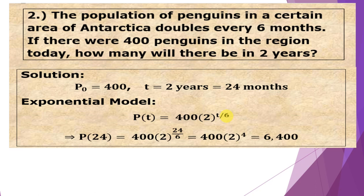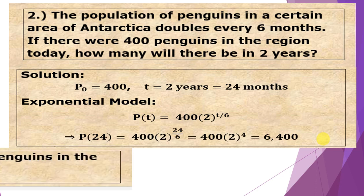So in this case, P(24) = 400 × 2^(24/6) = 400 × 2⁴ = 400 × 16, which gives us 6,400 penguins after 2 years.